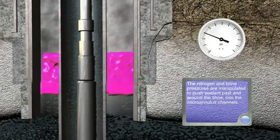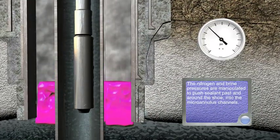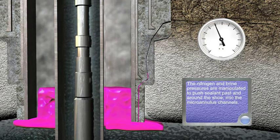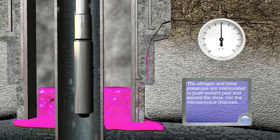The nitrogen and brine pressure are manipulated to push sealant past and around the shoe, into the microannulus channels.